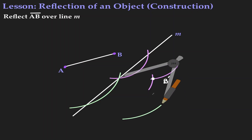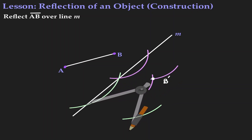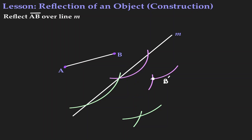Without changing the length of my compass, let me move my metal leg to the second intersection. Once we have it there, let's look for the intersection on the inside. At the intersection we've just found, here is where we're going to find the image of A — so let's call it A'.